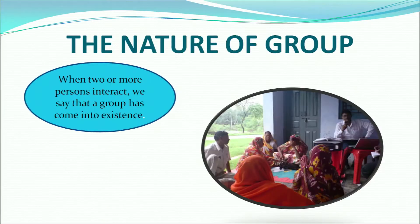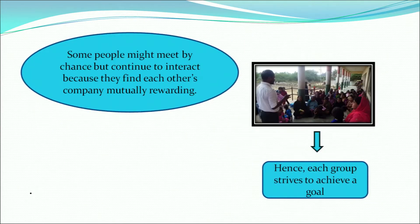The nature of group. When two or more persons interact, we say that a group has formed or come into existence. This is how a group is formed. Some people meet by chance but continue to interact because they find each other's company mutually rewarding. Therefore, each group strives to achieve a goal.